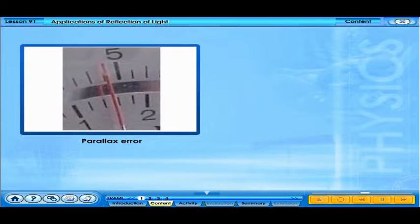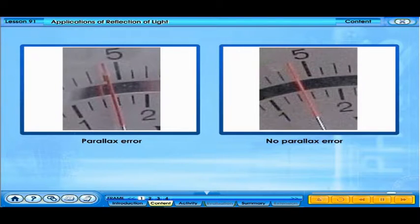This is the wrong way to read the scale, because the reflection of the pointer could be seen. This is the right way to read the scale, that is, with the eyes directly above the scale and with no reflection of the pointer.